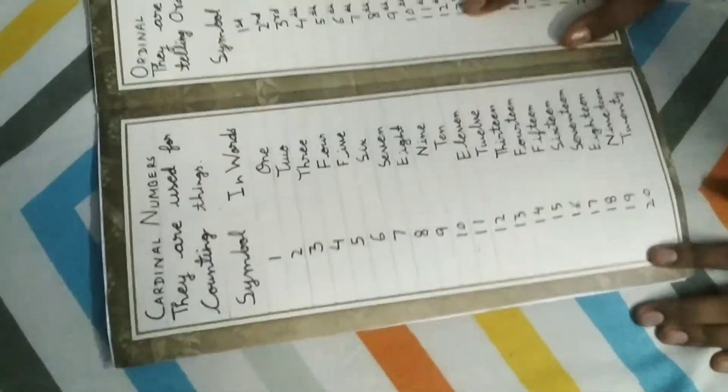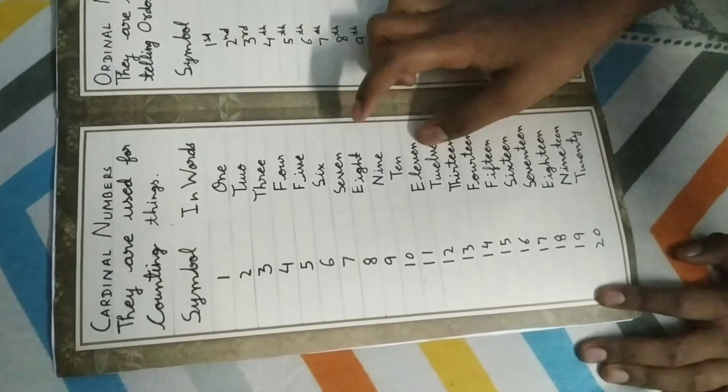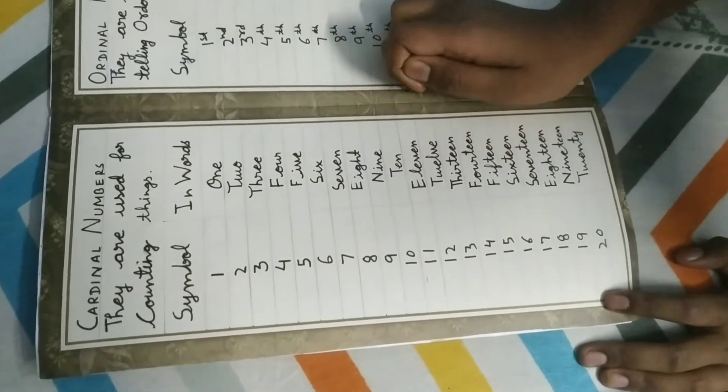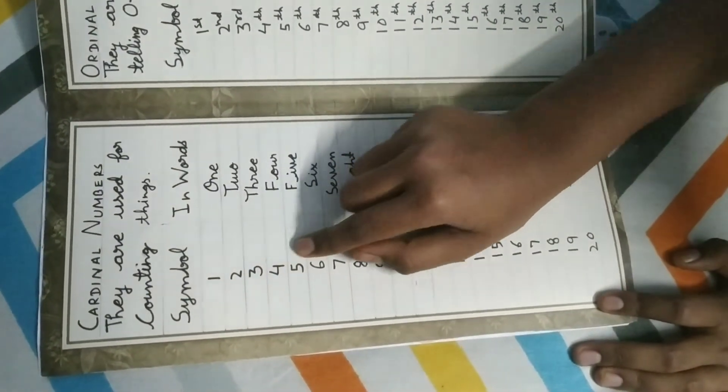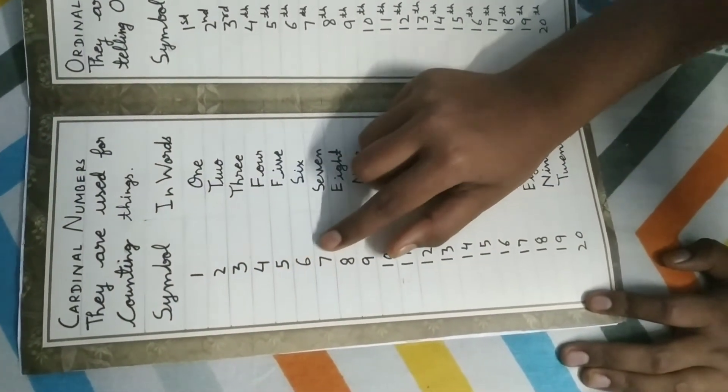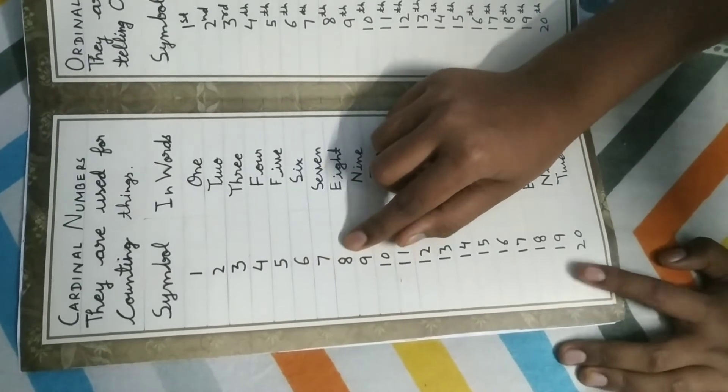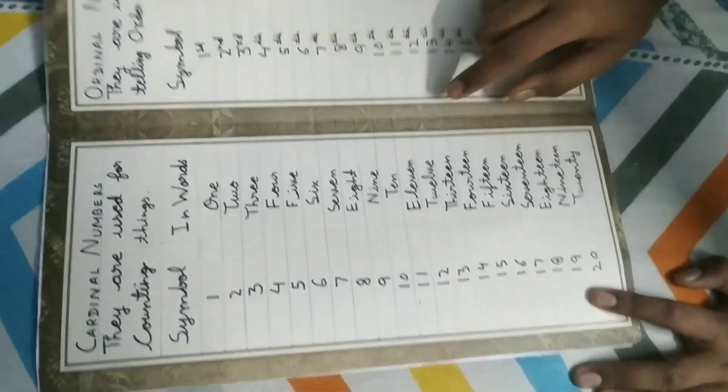Cardinal Numbers are read as 1, 2, 3, 4, 5, 6, 7, 8 and so on.